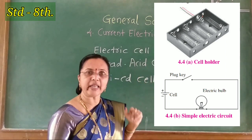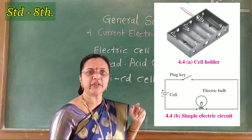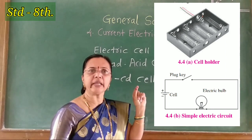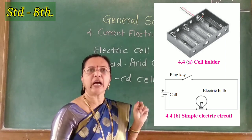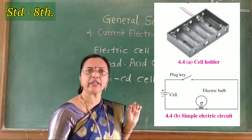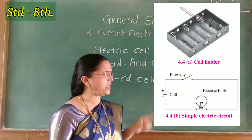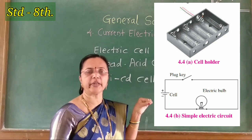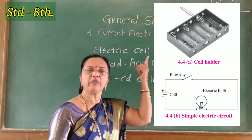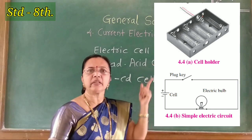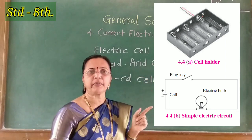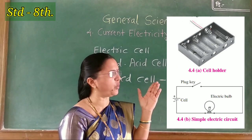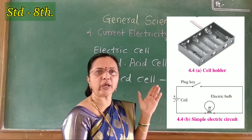Next point is the electric circuit. The first figure is a cell holder and the next figure is an electric circuit. When a cell holder, electric bulb, and plug key are connected by connecting wire as shown in this figure, and the dry cell is fitted in the holder — look at figure 4.4a — the bulb lights up by closing the plug key.